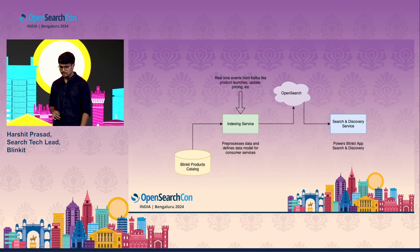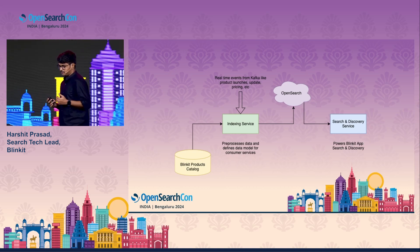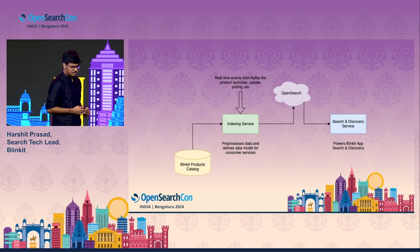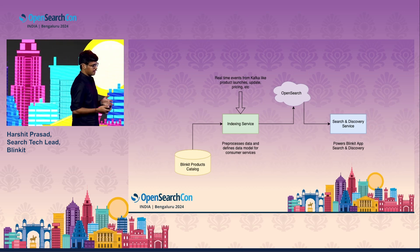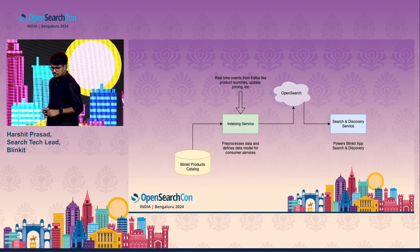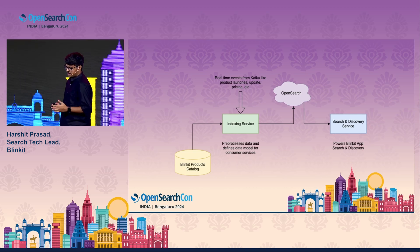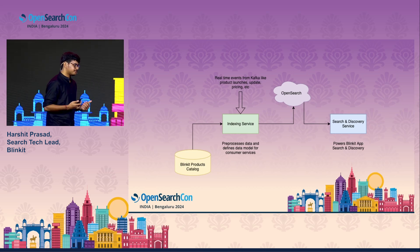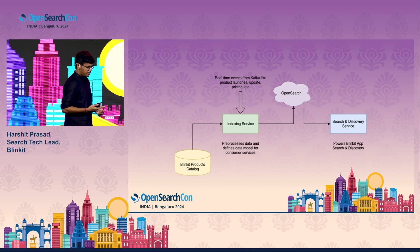To give a brief overview: we have a raw catalog of products, and we have an indexing service mostly responsible for the writes we do on OpenSearch. We have another service — Search and Discovery — where the task is to do only the reads part. The indexing service also pre-processes the raw data into our data model and the schemas we have defined, as per our use case.